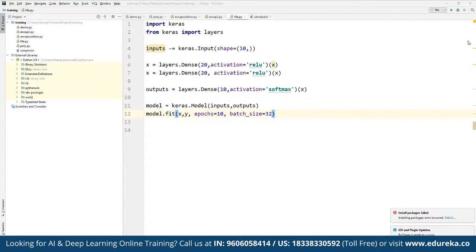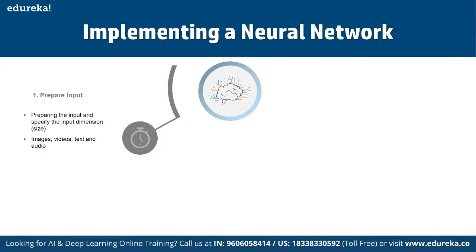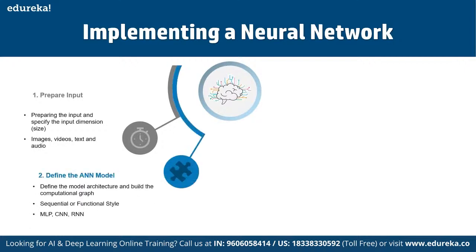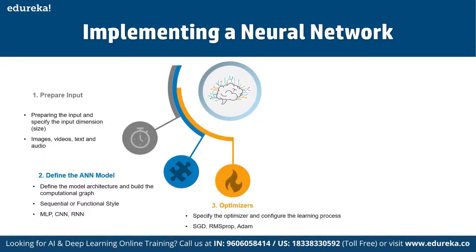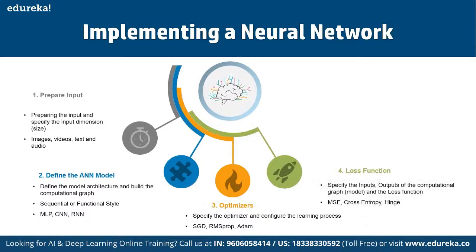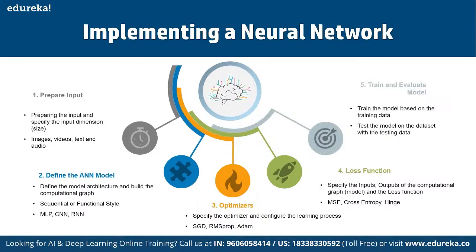Those are the two main models available. Now in terms of the implementation of a neural network, we need to: first, prepare the input — specify the input dimension for images, videos, text, and audio. Second, define the AI model — define the model architecture and build the computational graph, which can be sequential or functional, and define MLP, CNN, and RNN models. Third, work on optimizers — specify the optimizer and configure the learning process, which includes SGD, RMSprop, and Adam. Fourth, define loss functions — specify inputs, outputs, and the loss function such as MSE, cross-entropy, and hinge. Fifth, train and evaluate the model on the given dataset with the testing data available.